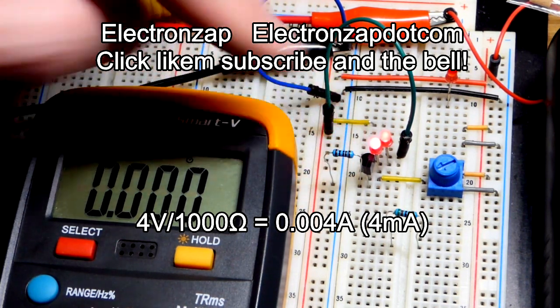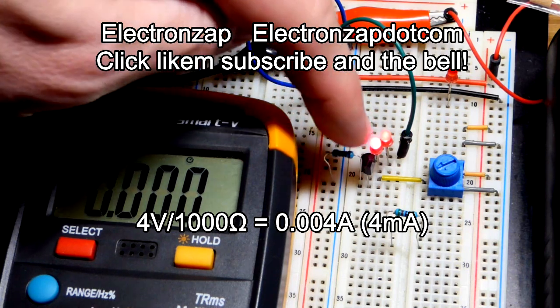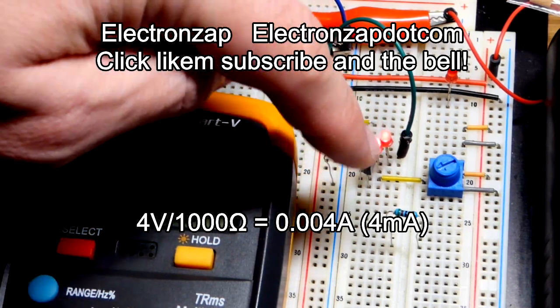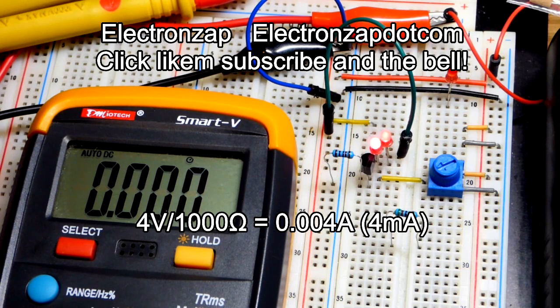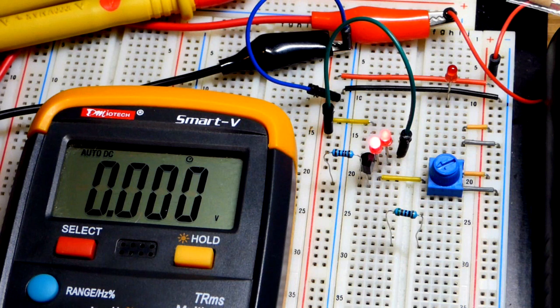we set the voltage minus the 0.7 volt drop with the trim pot. And based on the resistor we used, we'll get a certain amount of current. Since this is 1 kilo ohm, 1,000 ohms, it'll be 1,000th the current of the voltage we applied, minus the diode drop.